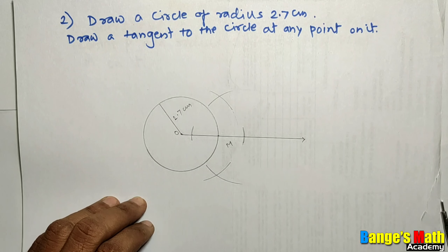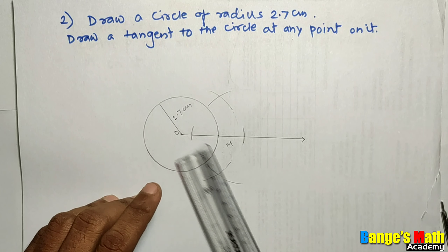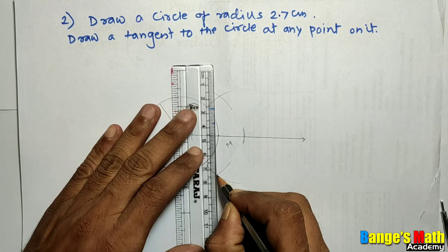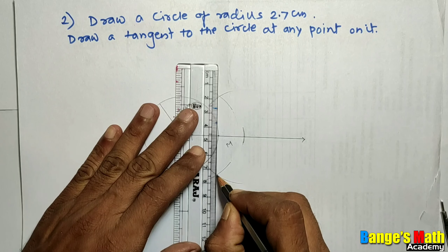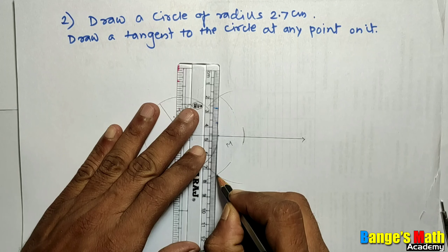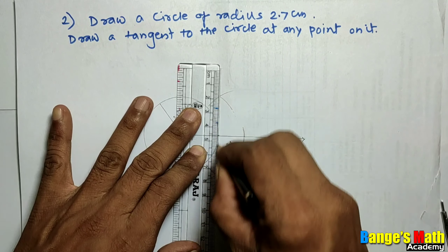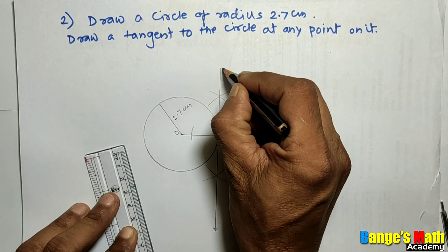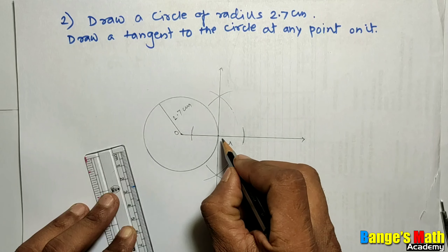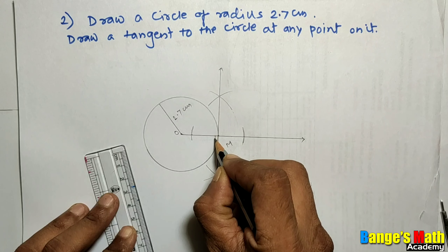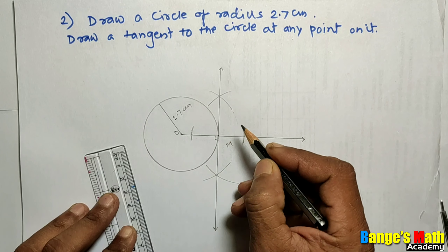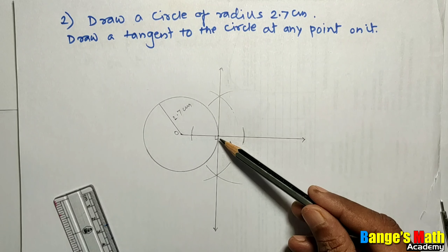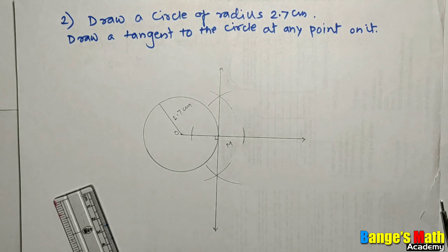Then join this with the help of a ruler. We draw the tangent to the circle through point M.